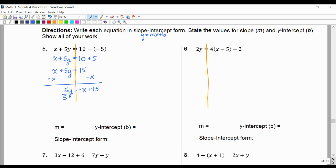And now at the very end, we divide every term by 5. There's a 1 here, negative 1/5x plus 3.